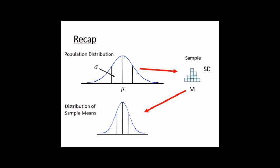We can take lots of different samples from that population and get the mean of each, and see how those means are distributed. That's a really useful thing — we want to compare our samples, to see if our sample of interest is weird compared to what we'd expect for lots of samples like that. We just have a different distribution here with a central tendency and some width. We could also look at how the standard deviations of those samples were distributed.